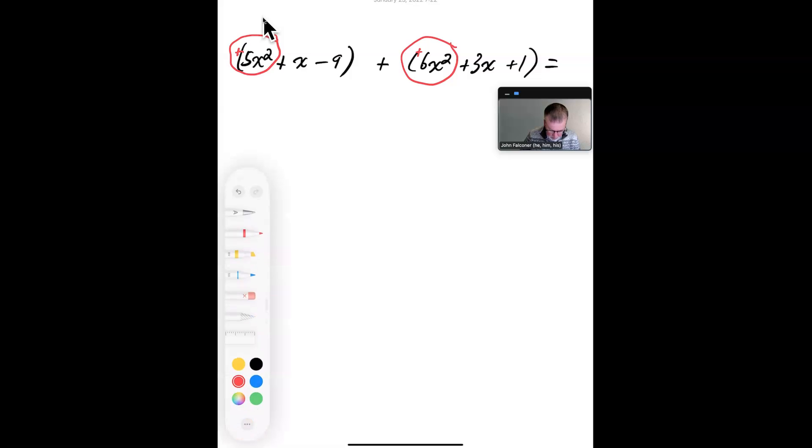Let's change colors once. Then we have a positive x, and a positive 3x. And then the last group, we've got negative 9, and positive 1. So, we're going to add these color groups together. And that will be how we add this polynomial.